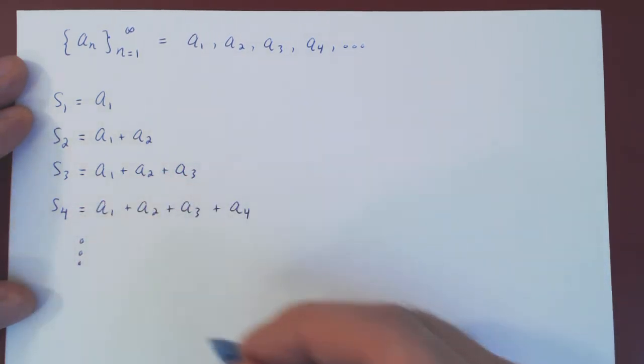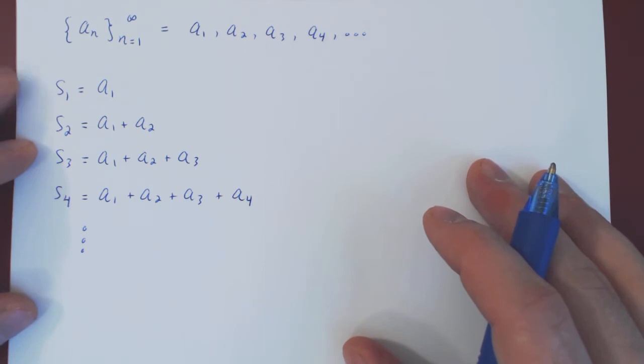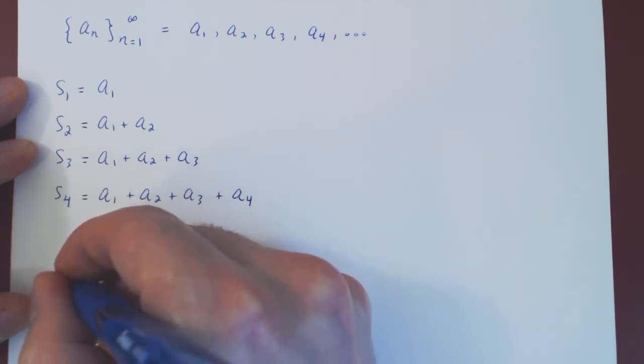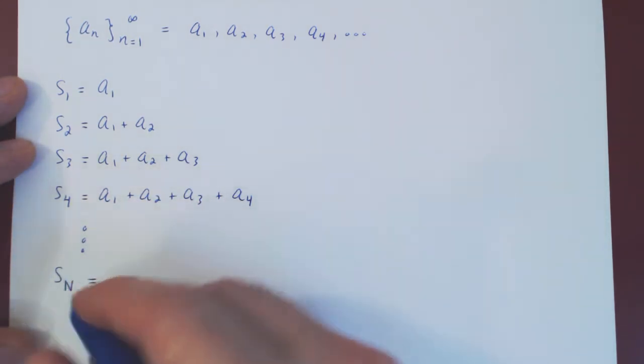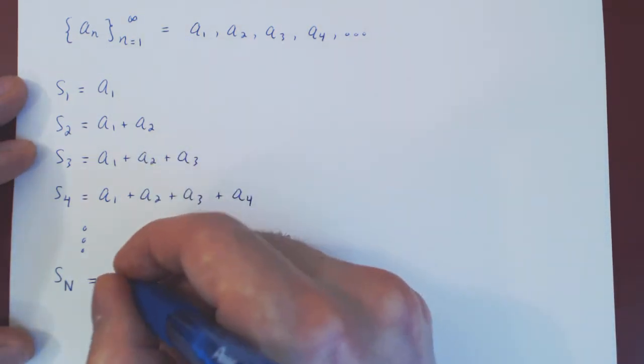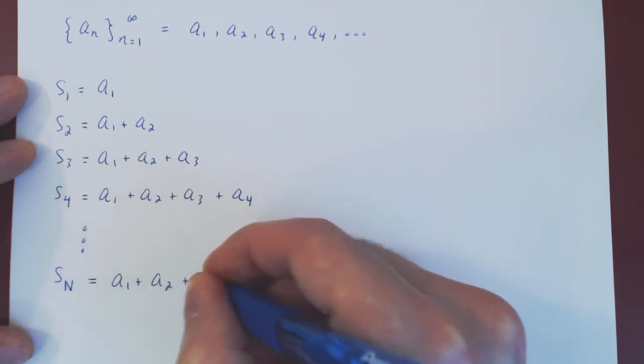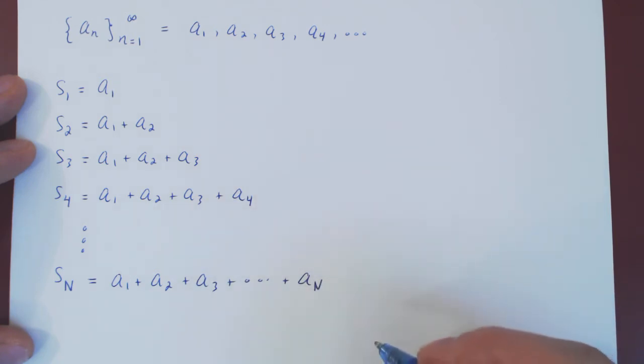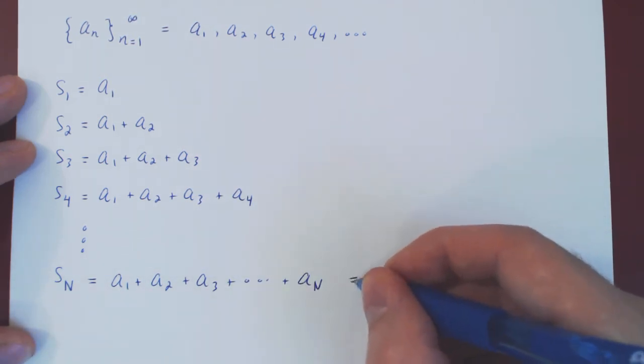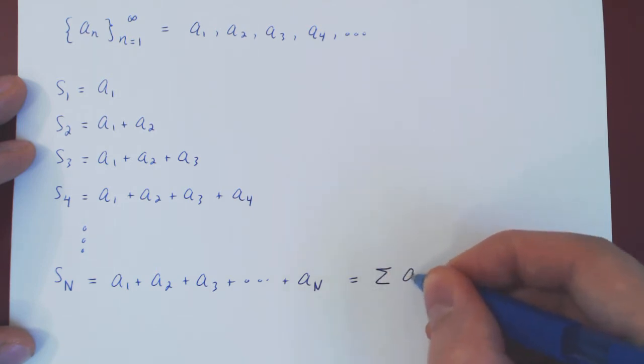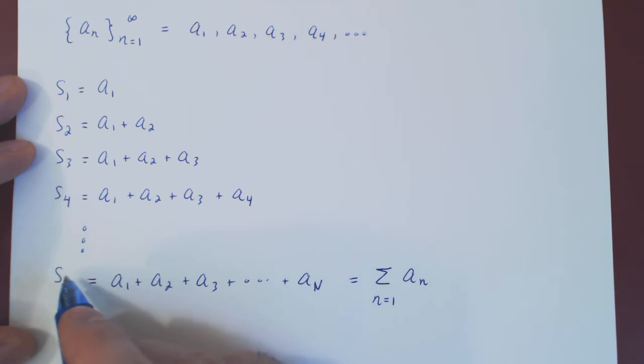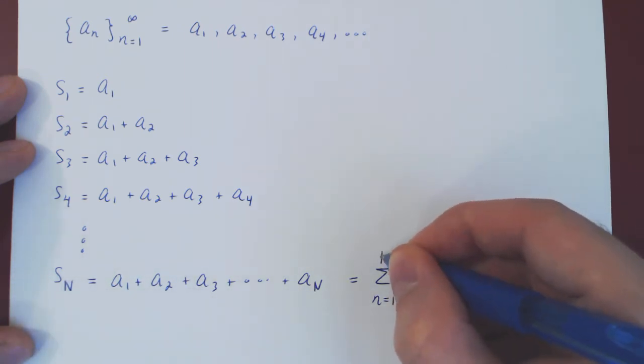And we can keep going like this. So in general, what if we try to add the first positive uppercase N terms of the sequence? So s subscript uppercase N, we're adding the first uppercase N terms of the sequence, so a1 plus a2 plus a3 plus dot dot dot, all the way up to the nth term of the sequence. And we can of course write this concisely using sigma notation. We are adding a_n, the terms of the sequence, beginning from the first term all the way up to the nth term, uppercase N.